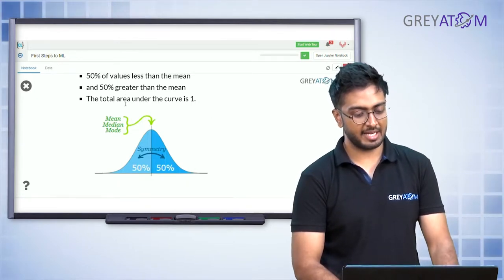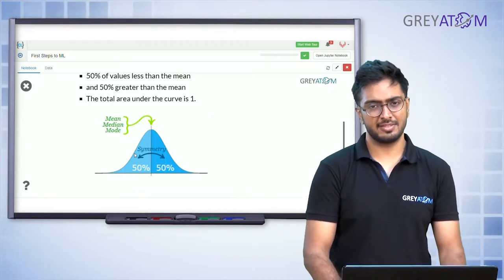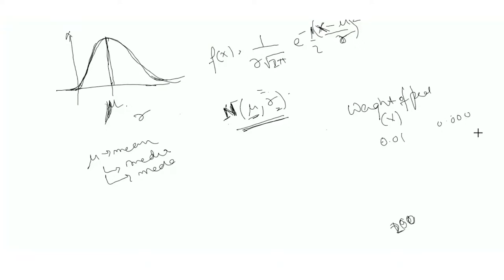The total area under the curve is one. This is intuitive: your random variable — say weight of people — could range from near zero all the way to maybe 200 kg. Each point on the curve represents the probability of a person having that weight, with the highest probability somewhere around the middle, say 75 kg, and very low probabilities at the extremes.